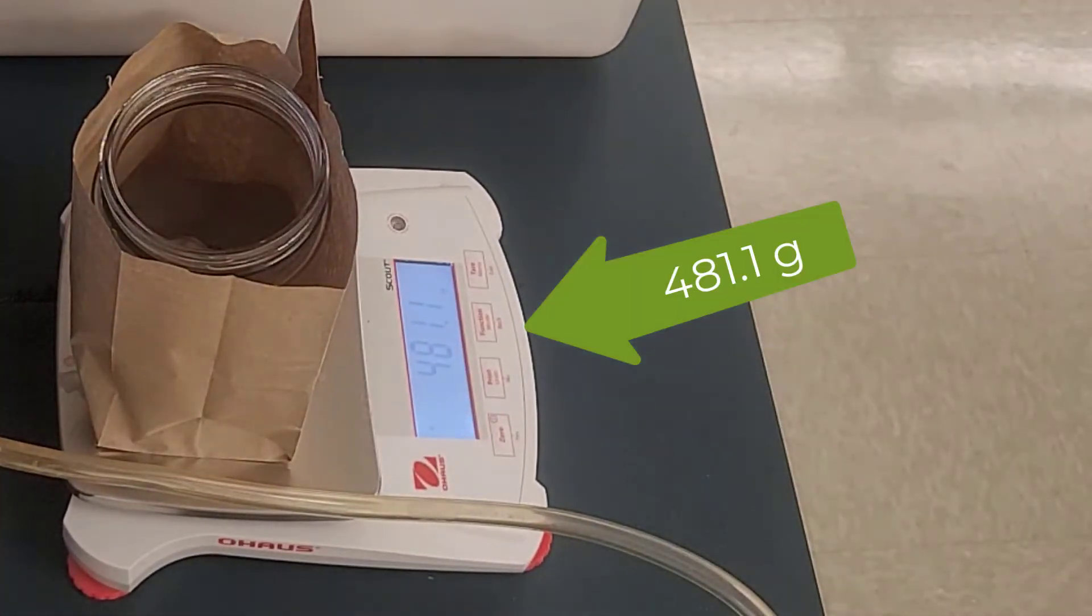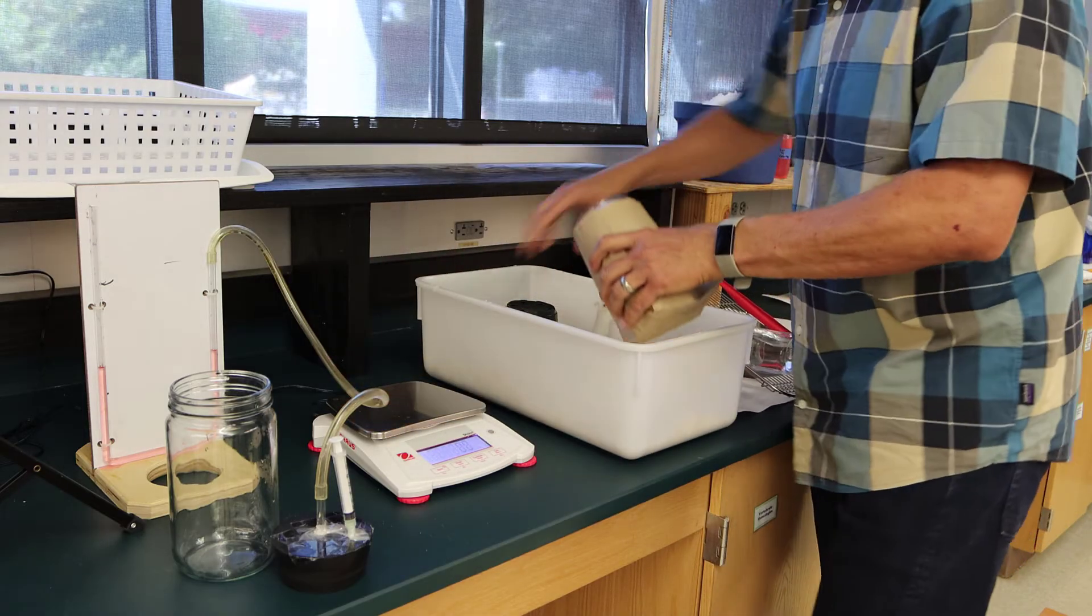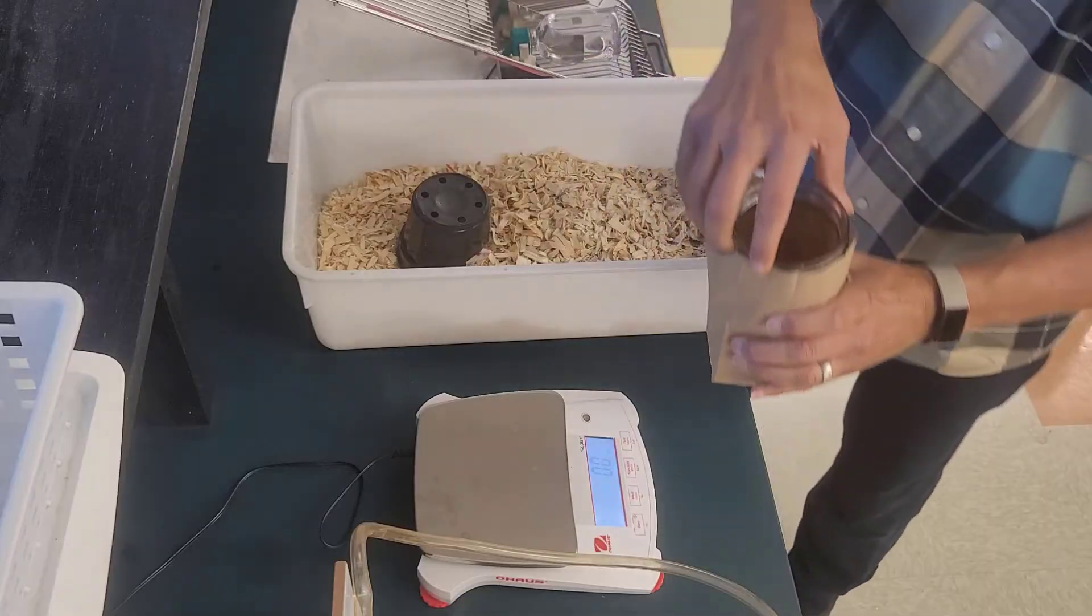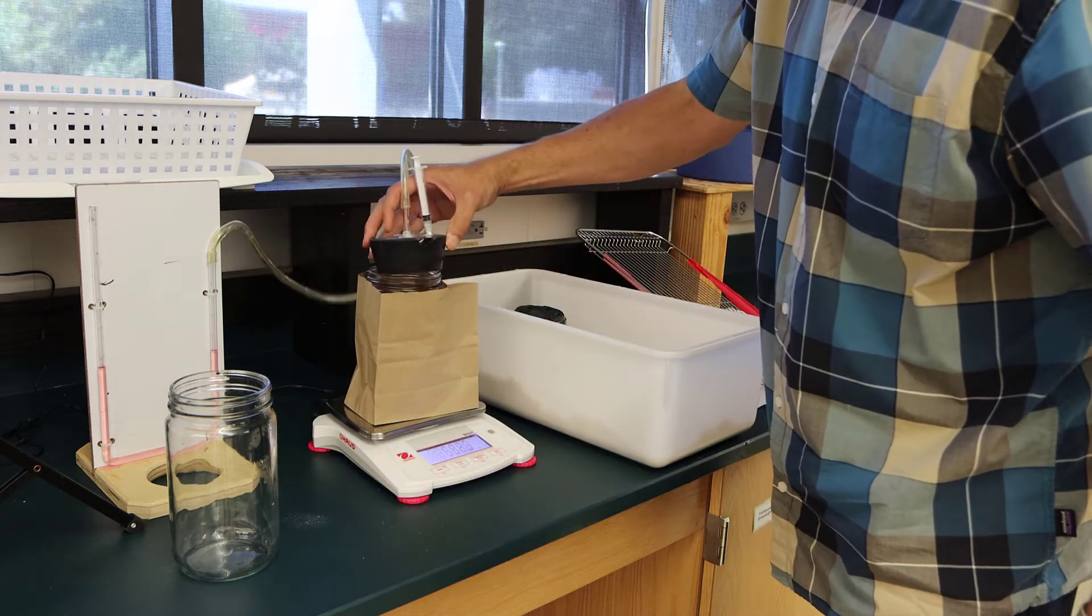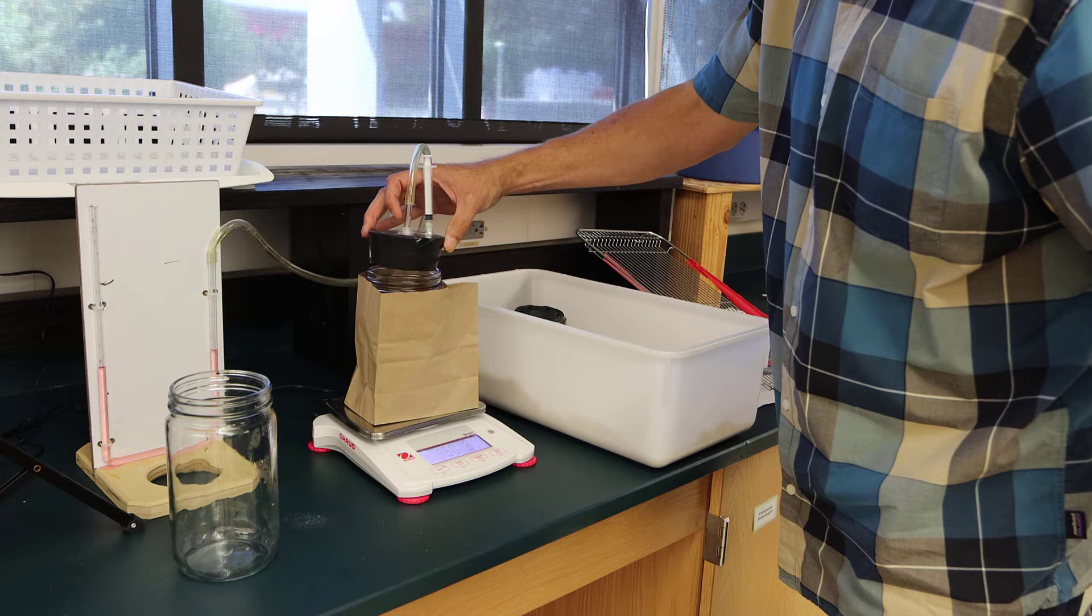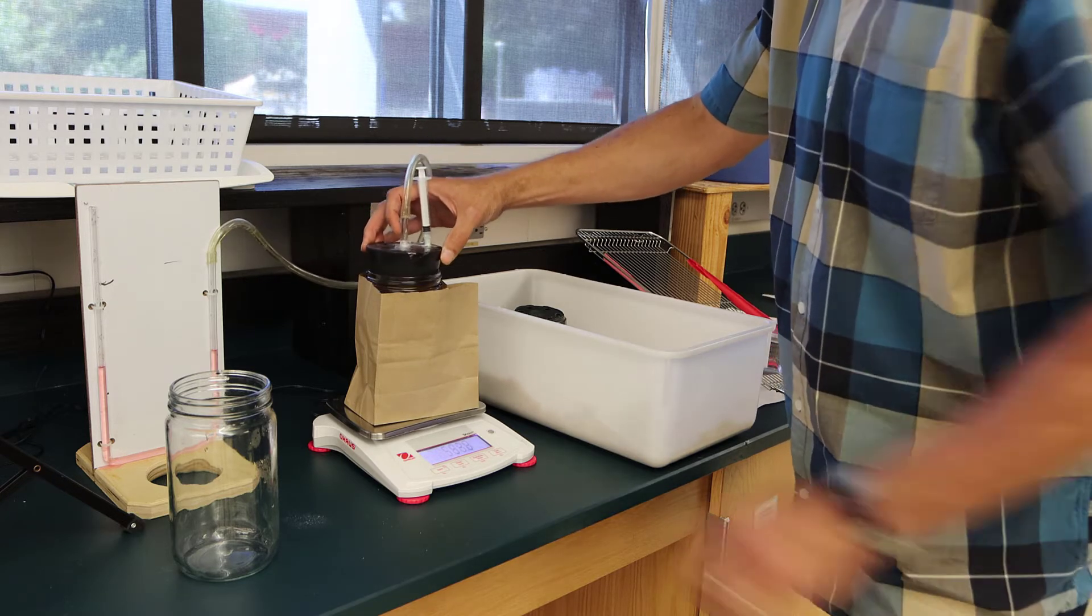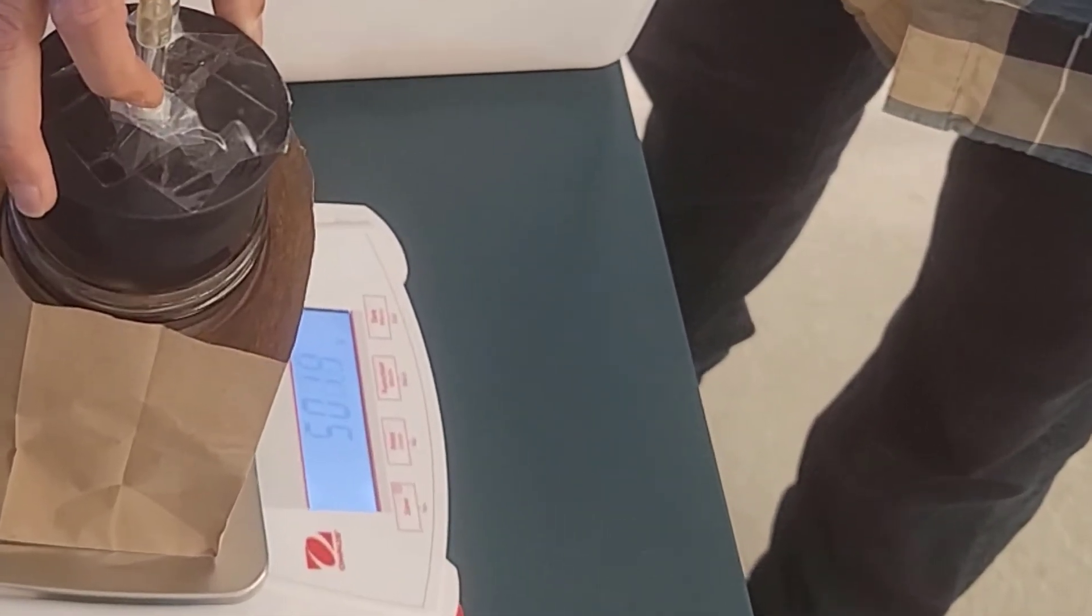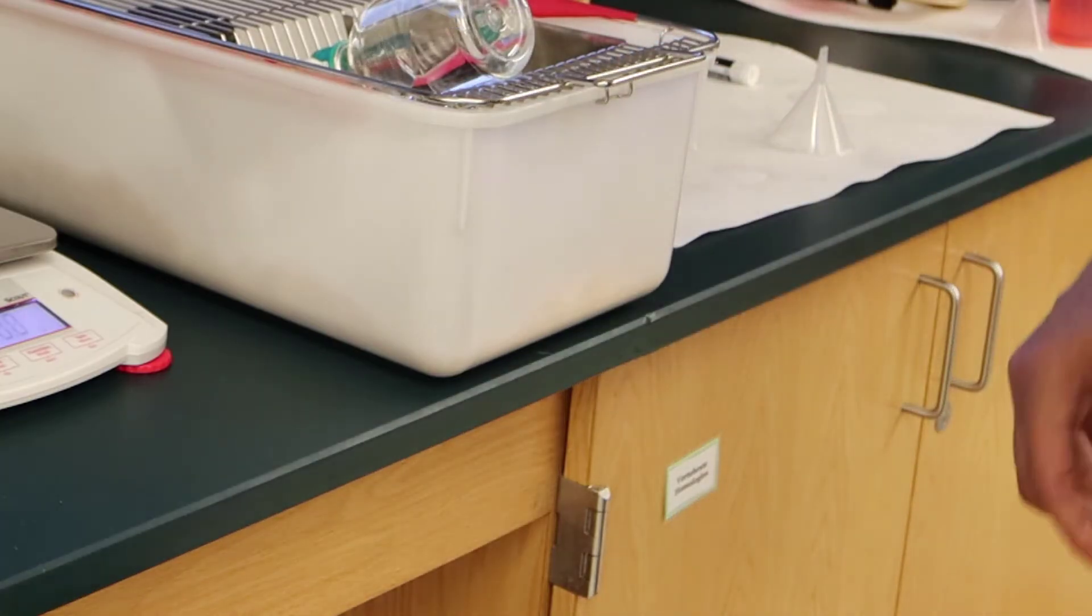You need to record that number because that's the weight of our setup without the mouse. Then we need to put our mouse inside the jar and weigh that setup. We hold the lid over so the mouse doesn't hop out, and we get a weight of the mouse and the jar and the chemical packet with the bag. We're going to need that weight to do the rest of the calculations.